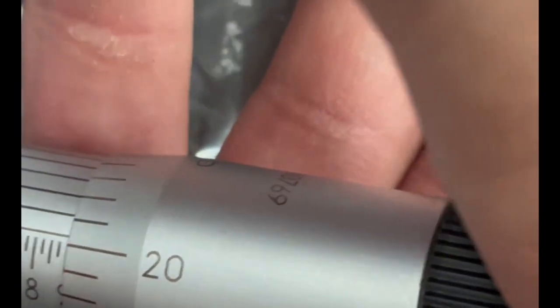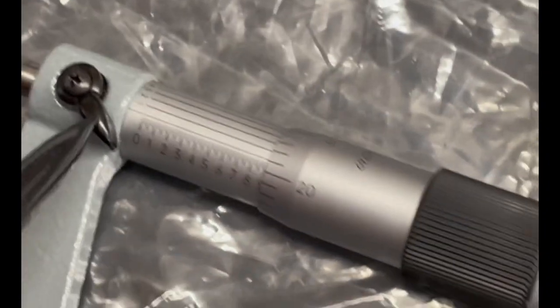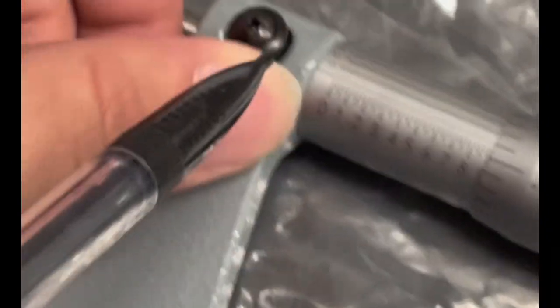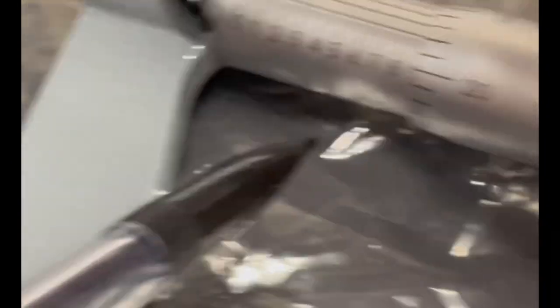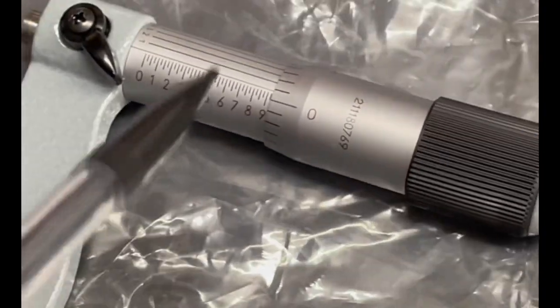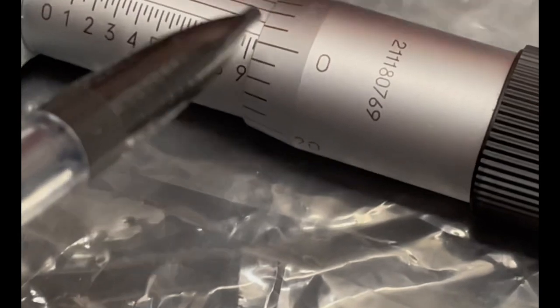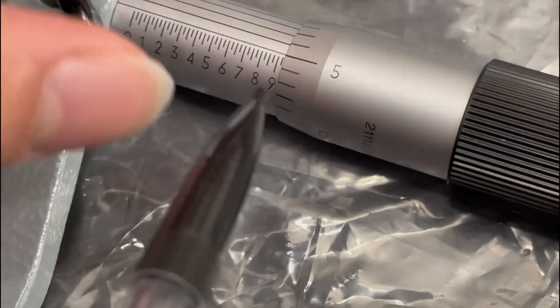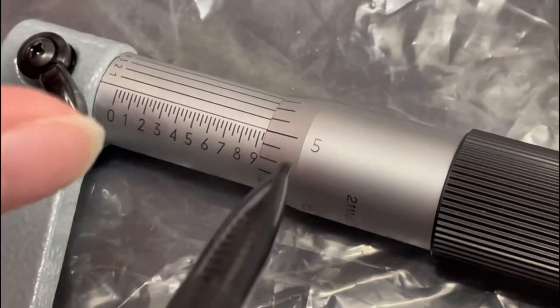So if I disengage the lock, this is the lock right here. This is the on position, this is the off. Return this back to zero. This is the zero. So you have this, this is the five, so that would be five thousandths of an inch.